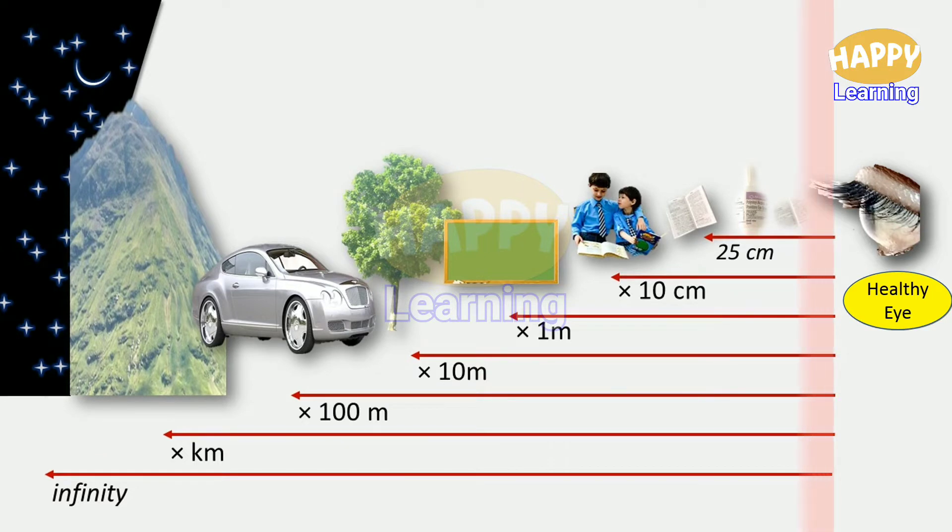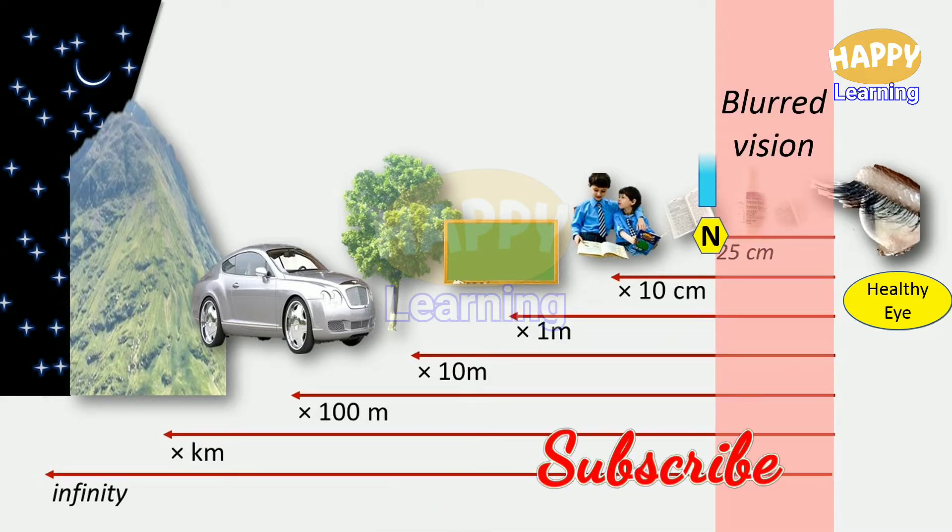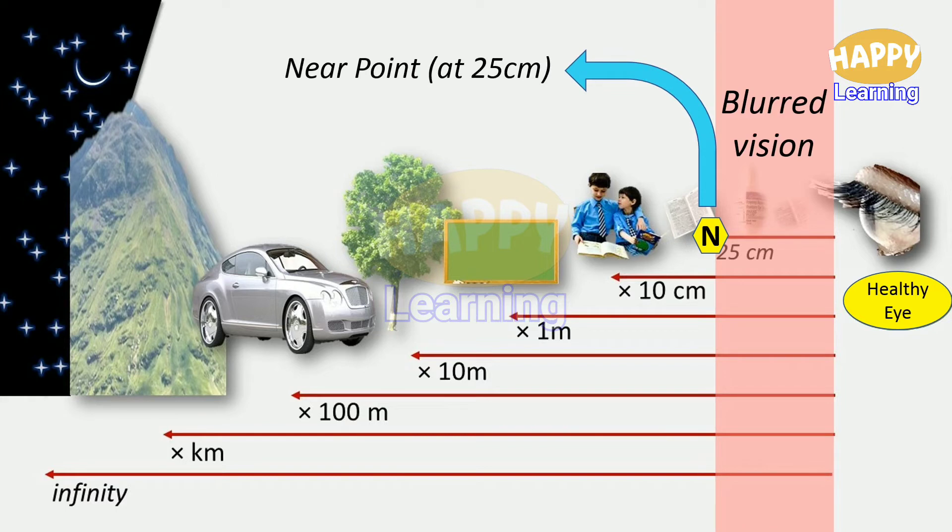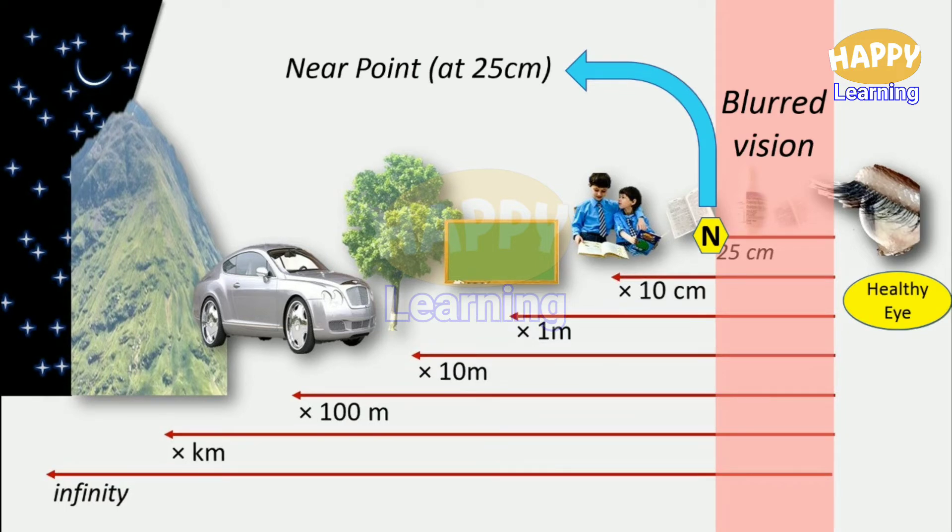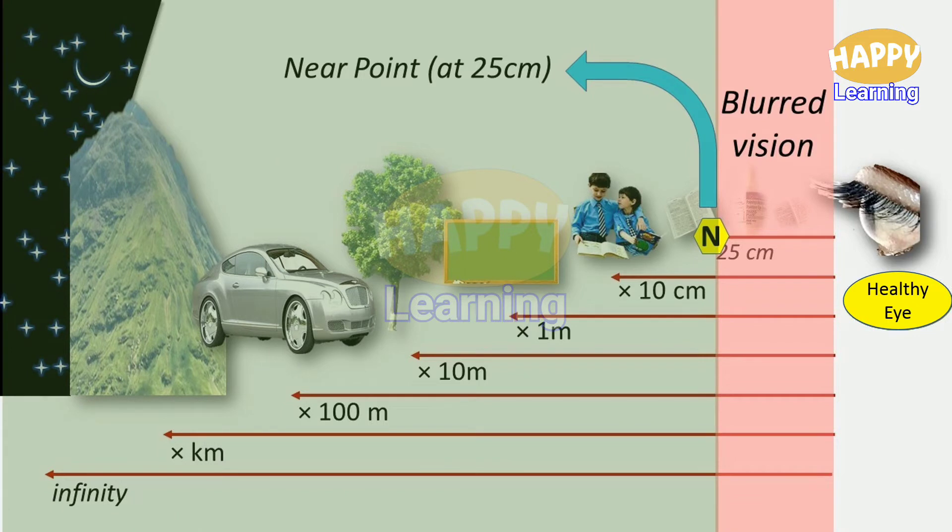These two objects are not clearly visible. This region from the eye up to 25 centimeter distance is not visible to any eye. This is a blurred vision. The point at 25 centimeter is the near point. So this is the nearest and clearly visible point, and the region from 25 centimeter onwards is clearly visible to this eye.